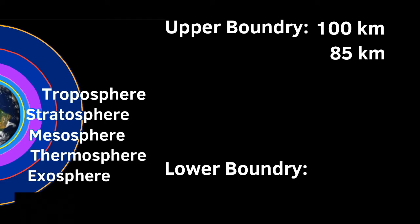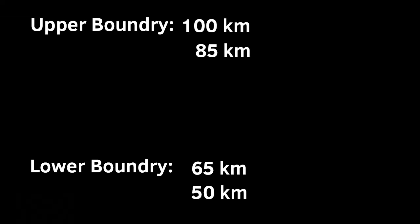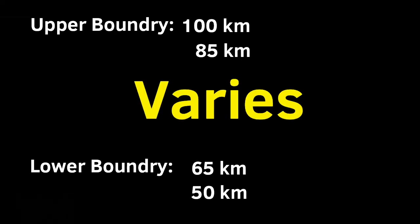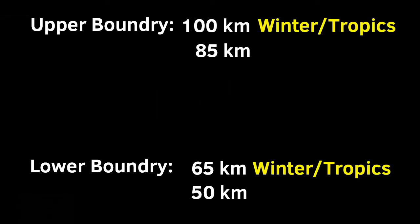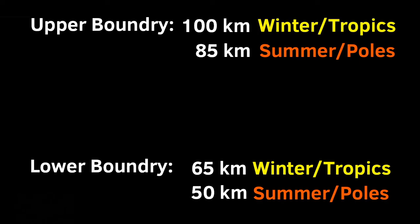The lower boundary varies from 50 kilometers to 65 kilometers. The mesosphere's upper and lower boundary varies depending upon the season and the location. The higher boundaries are found during the winter and in the tropics. The lower boundary is found during the summer and at the poles.